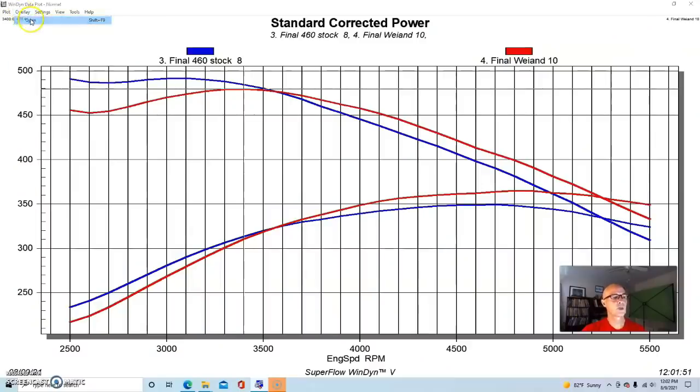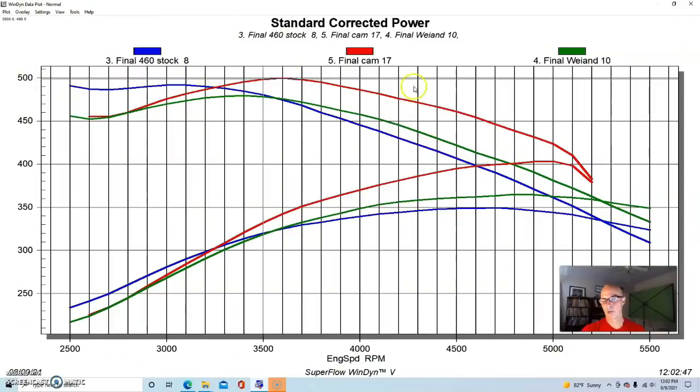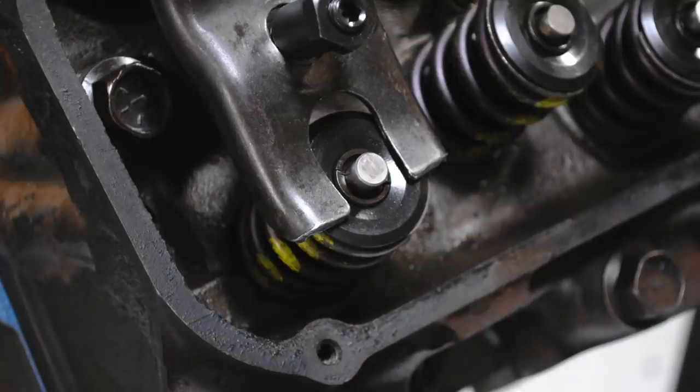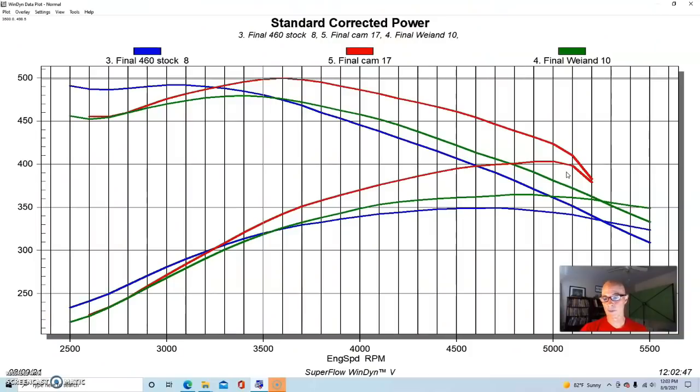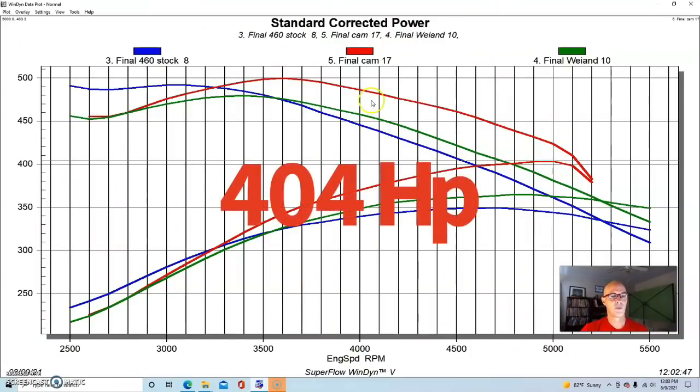But we didn't stop there, we put a camshaft in this thing as well. And here's what happened. We put the cam in and the first thing that we'll notice out here past 5000 RPM, we were getting into valve float. That's because the stock heads that we had on there did not have enough valve spring on them. But it did improve both the power and the torque quite a bit - 404 horsepower.